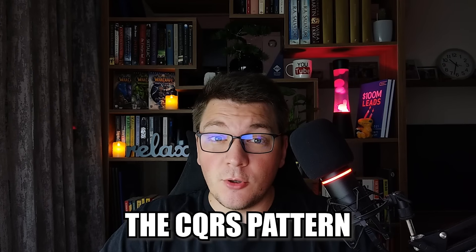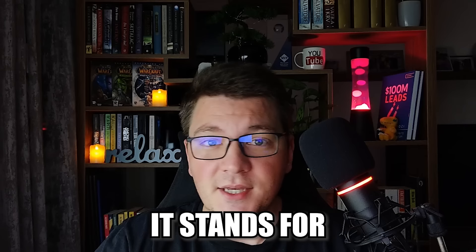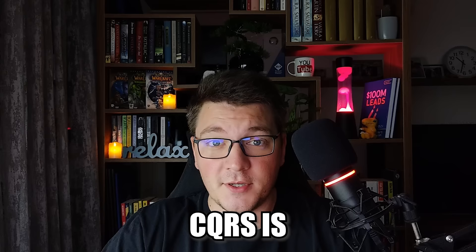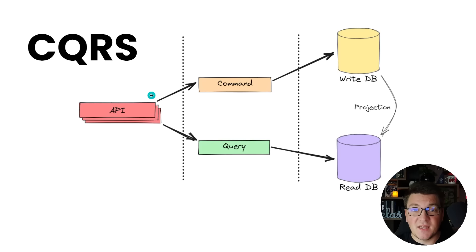The CQRS pattern is one of the most interesting architectural patterns. It stands for Command Query Responsibility Segregation. In this video, I'm going to explain what CQRS is and how you can start implementing it in your project. This is a high-level diagram of how an API request would flow through your application when you are using CQRS.